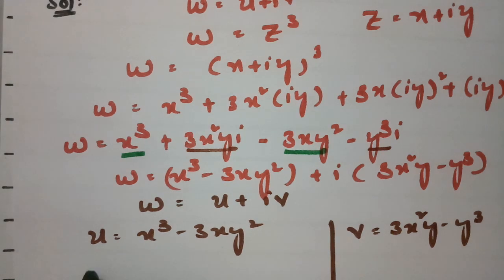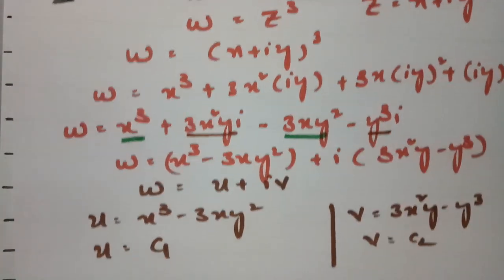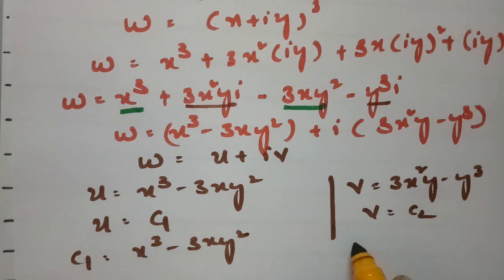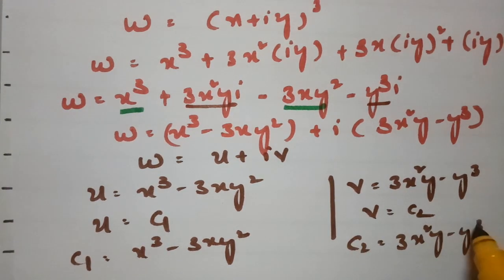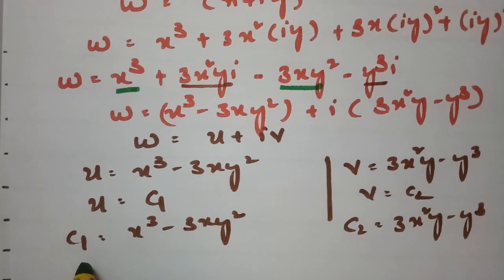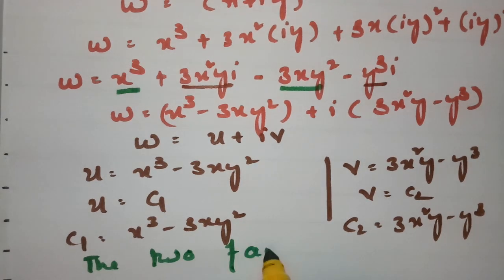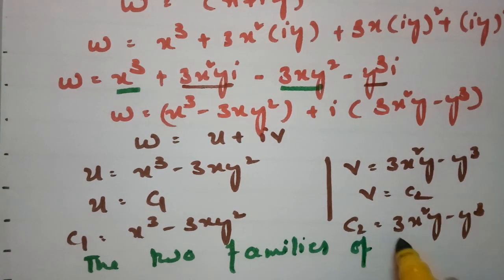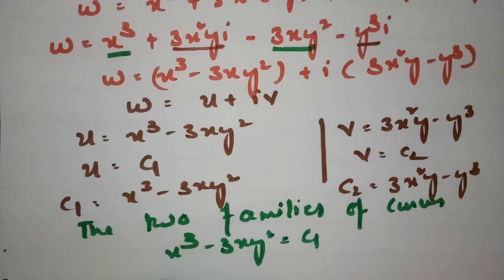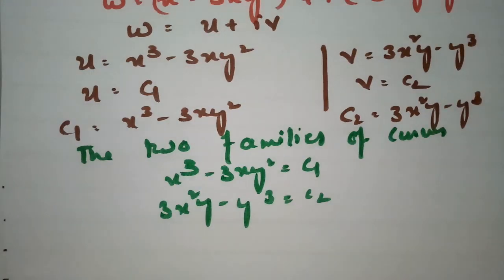Since u = c1 and v = c2 from the question, we have c1 = x³ - 3xy² and c2 = 3x²y - y³. These give us two families of curves: the first is x³ - 3xy² = c1, and the second is 3x²y - y³ = c2.